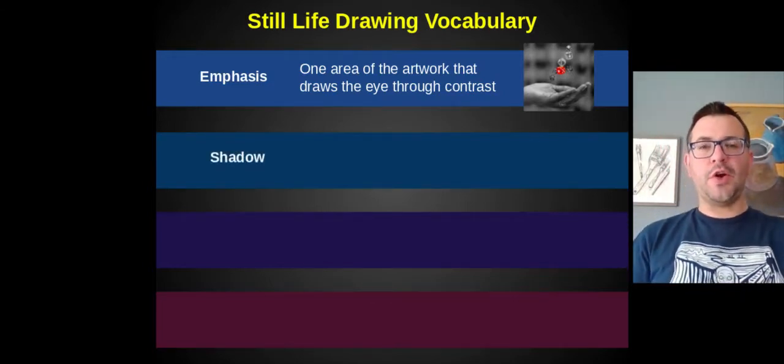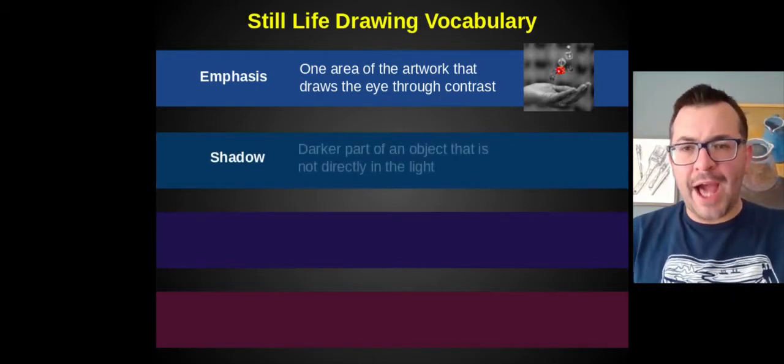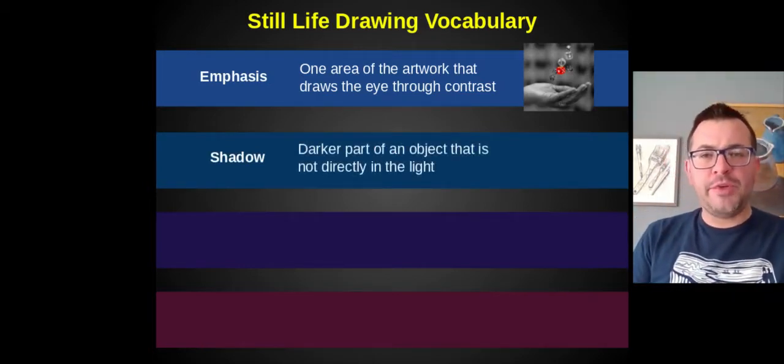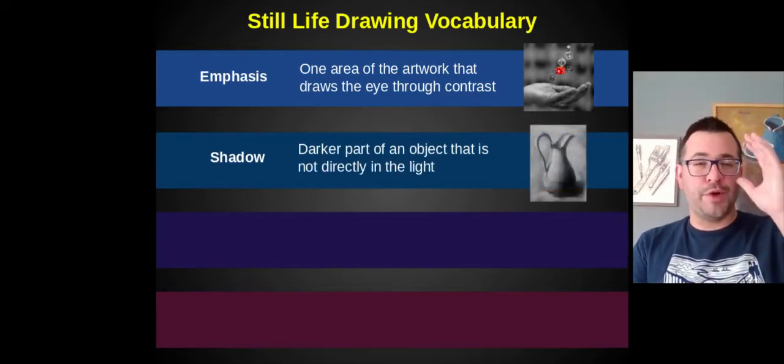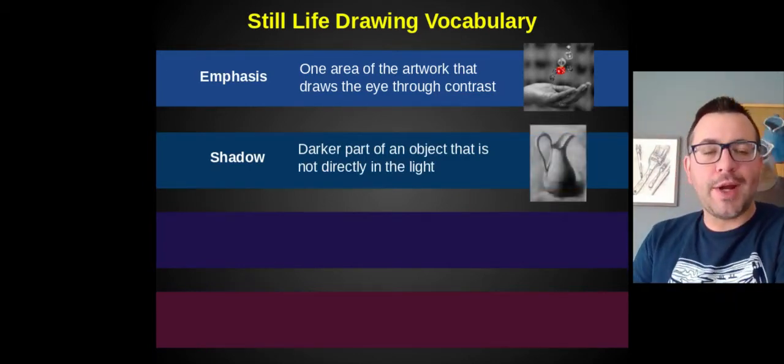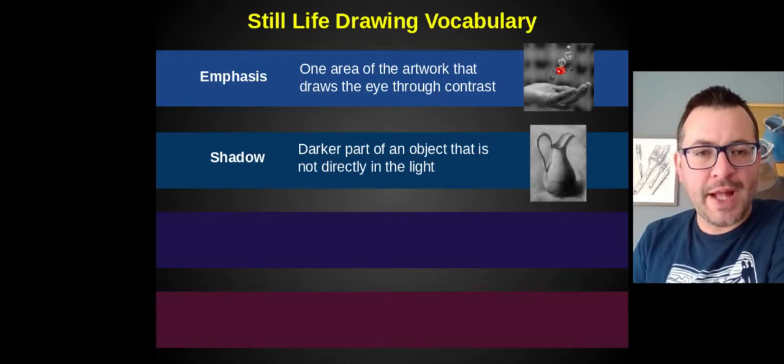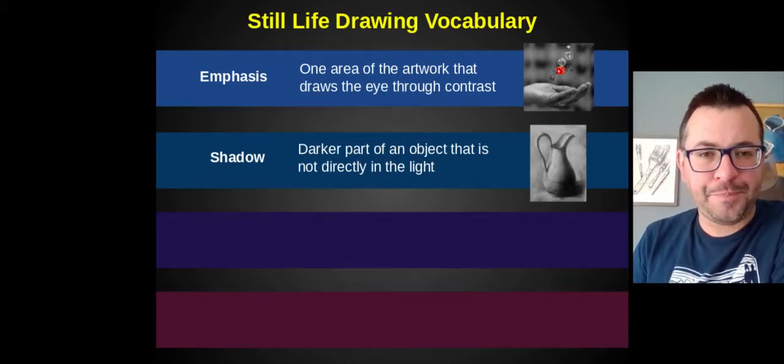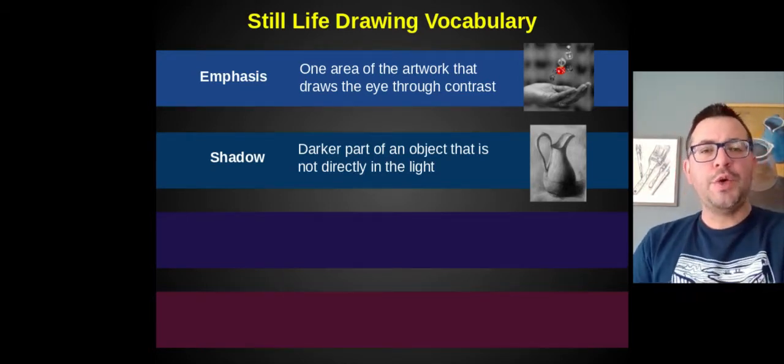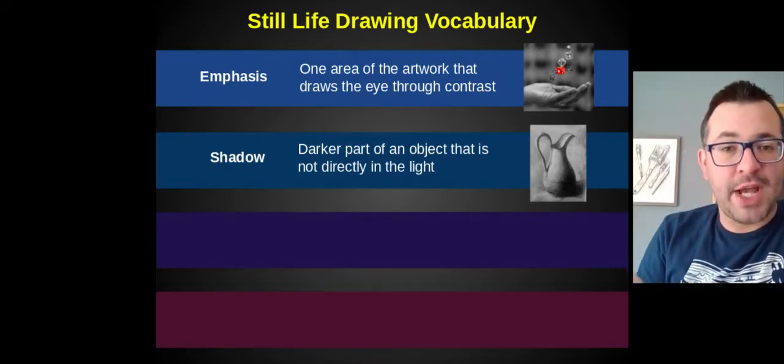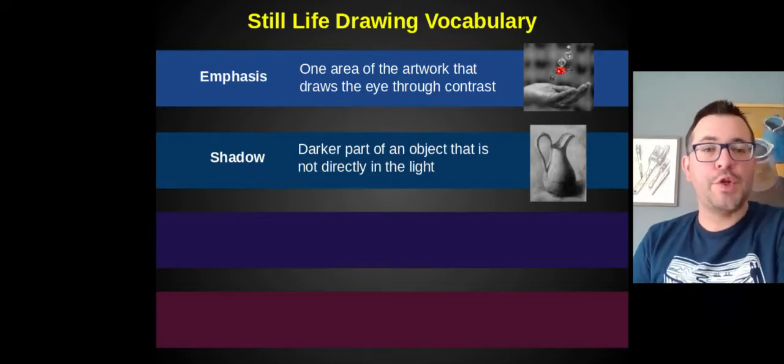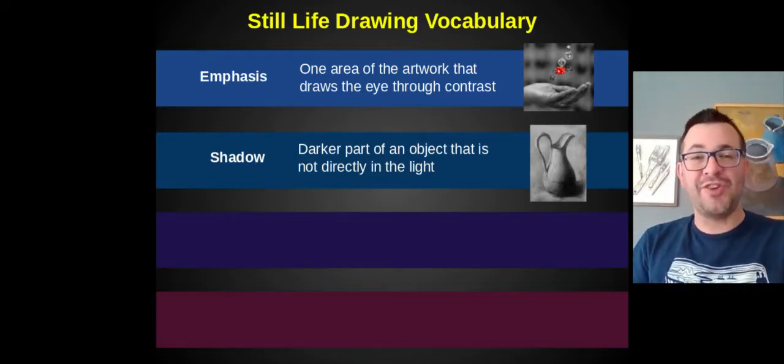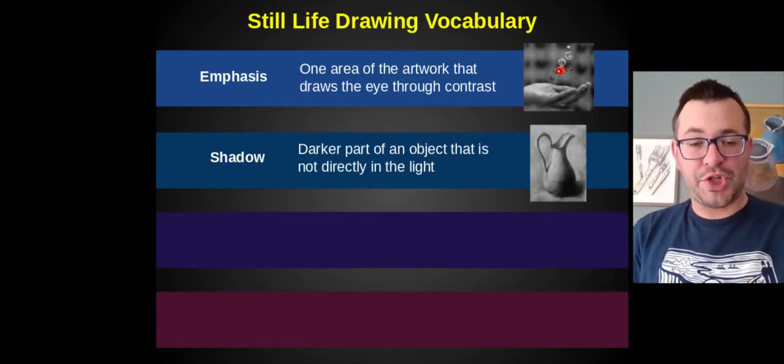The next vocabulary term that I'm sure you know is shadow. That's a darker part of an object that's not directly in the light. If you look at the water pitcher that's on the screen, the beautiful drawing of this object, you can see that the shadow on this object is on the right side. That's because the light is coming from the left. So the right side is darker, not directly in the light. That's the shadow.